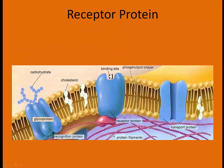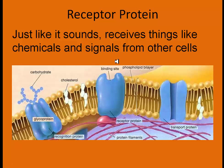Receptor proteins have a binding site shaped for a certain material, almost like enzymes. They receive chemicals and signals from other cells at that binding site, which causes a reaction down inside the cell, kicking off some sort of other reaction. We also have the glycoprotein markers sticking out the top, and the phospholipid bilayer with its hydrophilic heads and hydrophobic tails.